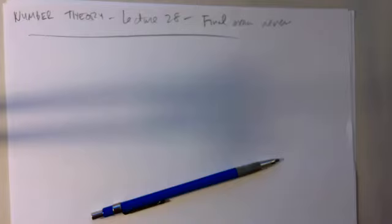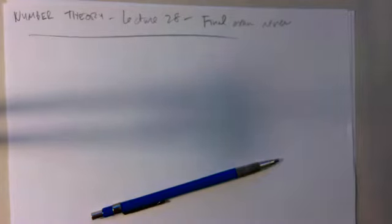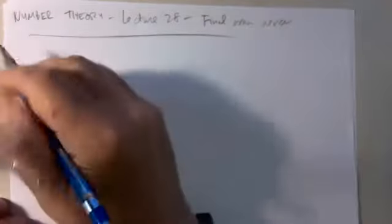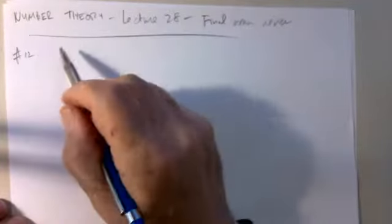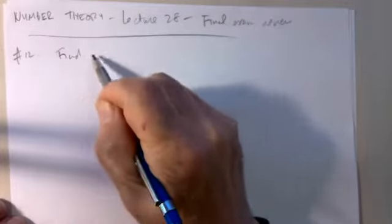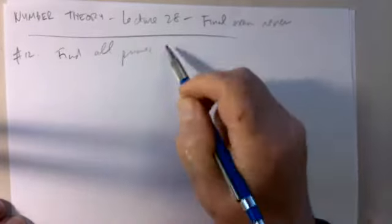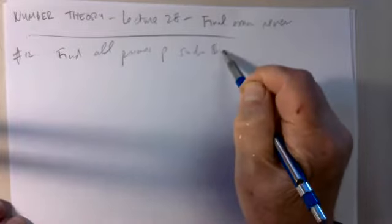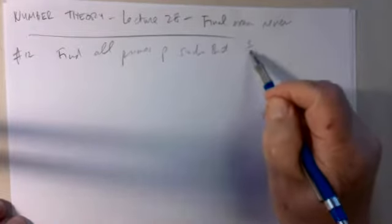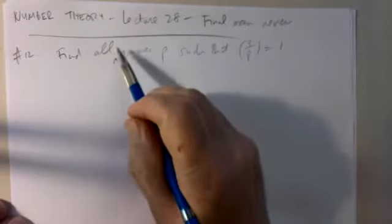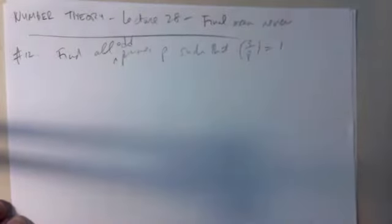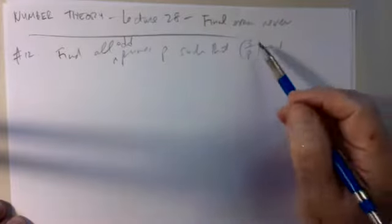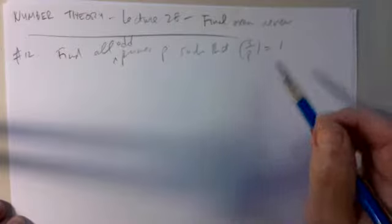Number 12 is to find all primes for which 3 is a quadratic residue. That's a very good problem. I think you use quadratic reciprocity here. Find all odd primes p for which 3 is a quadratic residue — that means the Legendre symbol has the value 1.